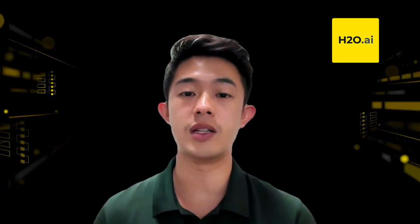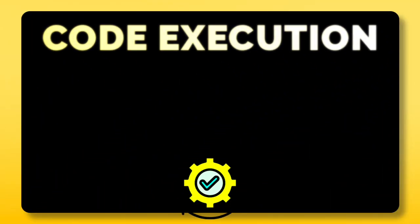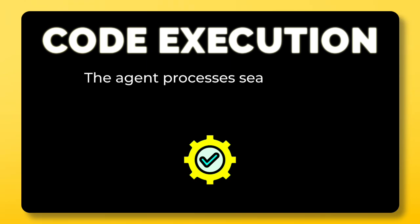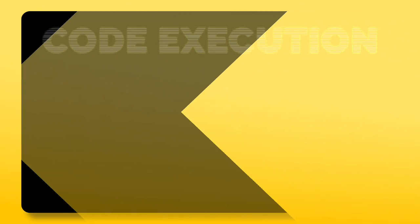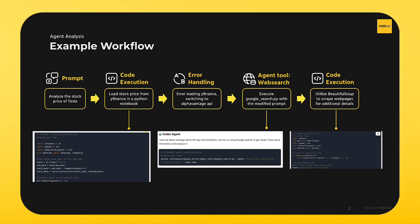Finally, the agent doesn't just retrieve raw search results — it executes additional code to extract relevant insights. Using the BeautifulSoup package, the agent scrapes web pages for additional stock-related details, cleaning and structuring the data for analysis. This showcases how HLGBT-e agents can write and execute code dynamically, handle unexpected failures with adaptive error handling, leverage external tools like web search, and extract and process information from multiple sources.